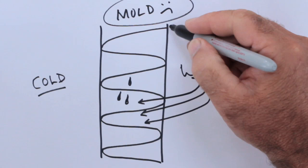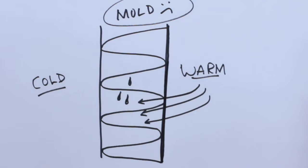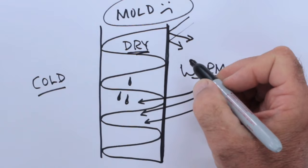That's why vapor retarders are applied to the warm side of a wall like this. When it's in place, that warm air cannot make its way into the wall cavity. That wall cavity stays dry, which is exactly what you want.